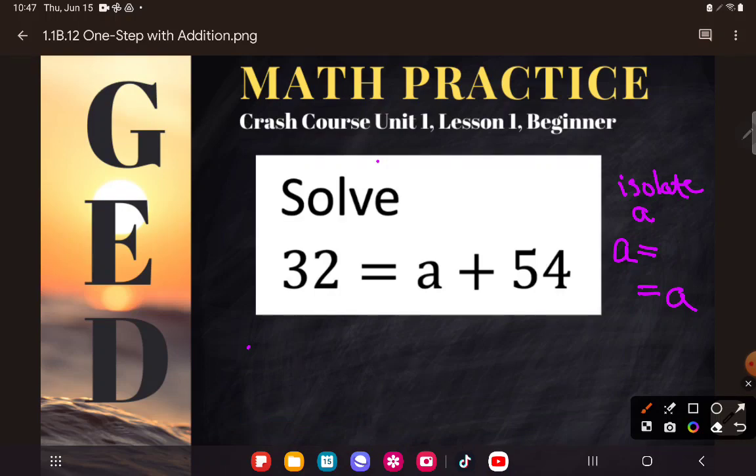So if you're a newbie or you struggle with algebra, I highly suggest you just draw this line through the equal sign. That'll help you to see the left-hand side and the right-hand side. And we can see over there on the right-hand side, that's where a is at. And he's not alone. There is a number hanging out that's doing something. It's performing an operation with a.